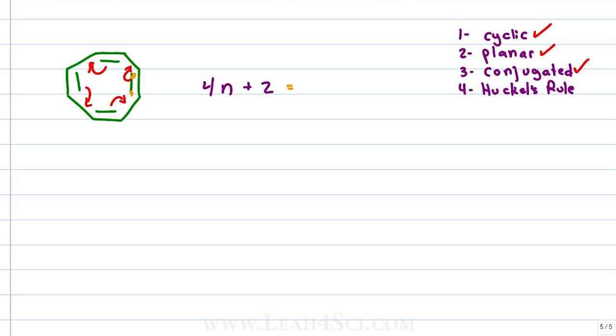4n plus 2 equals 8 resonating electrons. Solve for n, subtract 2 on both sides giving me 4n equals 6. Divide both sides by 4 which gives me n equals 6 over 4. You can simplify this to 3 over 2 or 1 and a half, doesn't matter. It's not a whole number, it's a fraction and that means this molecule disobeys Huckel's rule is unstable and not considered aromatic.